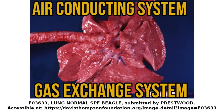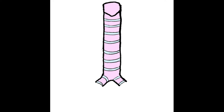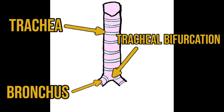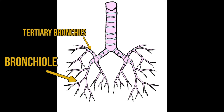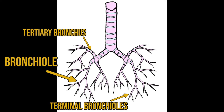The air conducting system begins with the trachea, which branches at the tracheal bifurcation to supply each lung with a bronchus. These bronchi produce further smaller branches known as tertiary or segmental bronchi, which continue to branch down to bronchioles and eventually the smallest air conducting unit, the terminal bronchiole. So what we're looking for are a series of tubes, which are easiest to see in transverse section as round profiles.